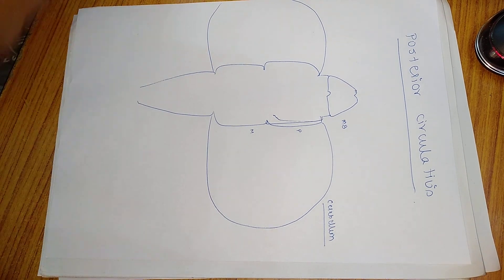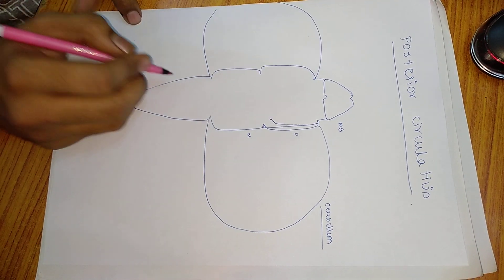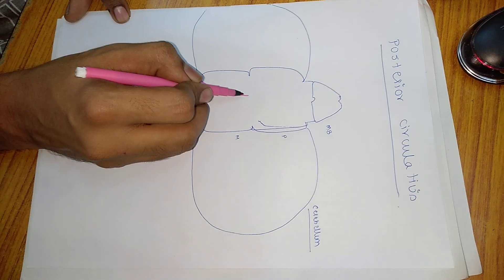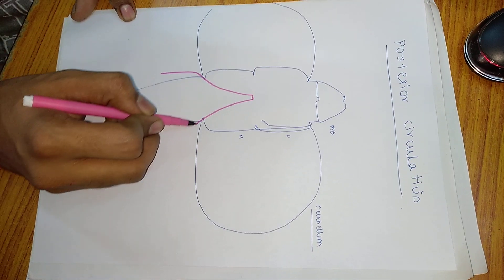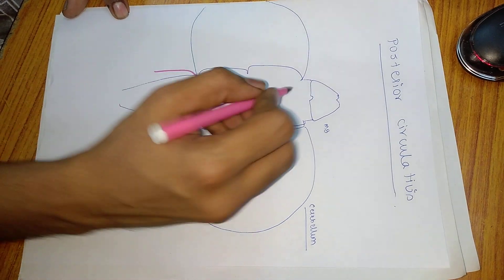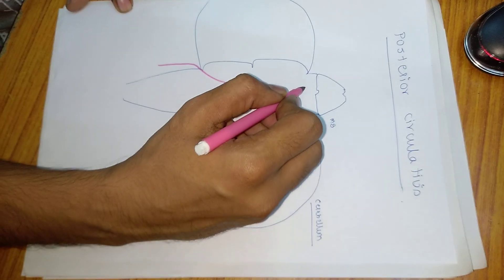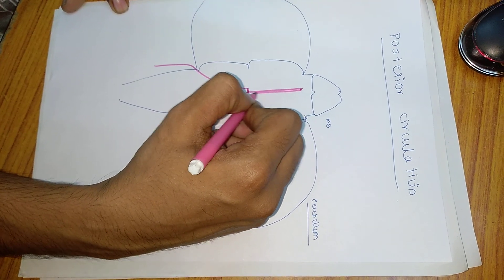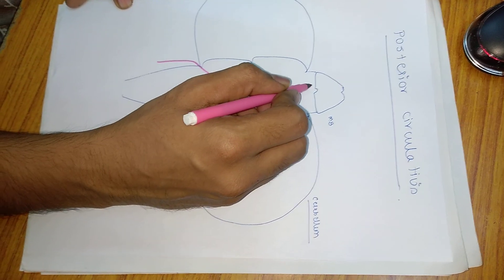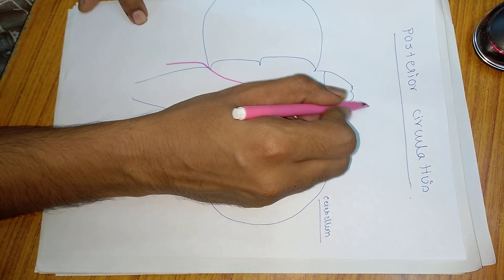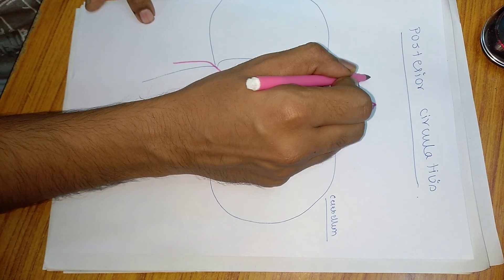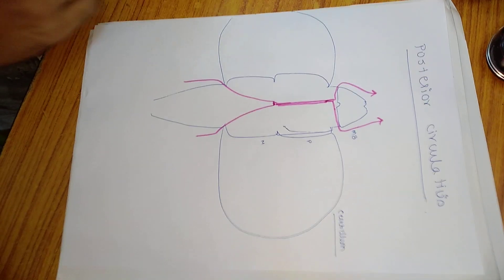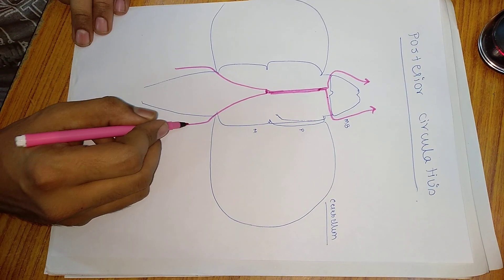Let us draw the vessels first. Grossly, there will be two vertebral arteries, one from either side, which unite at the pontomedullary junction to form the basilar artery. The basilar artery continues as the posterior circulation artery, which goes and forms the circle of Willis. This will be the gross vasculature of the posterior circulation.